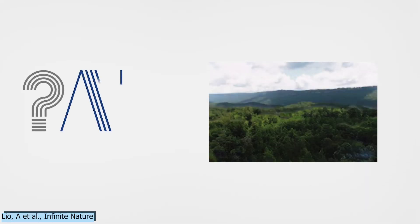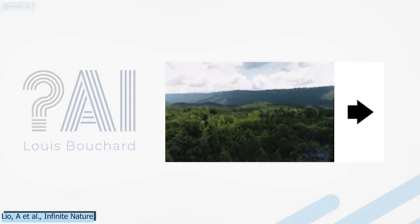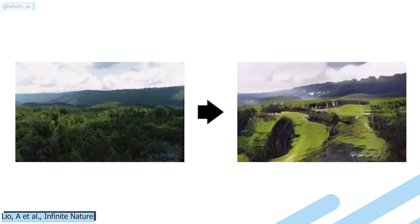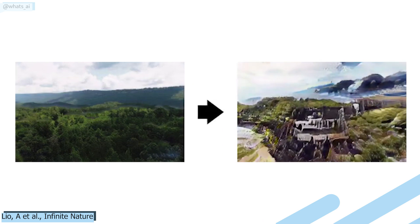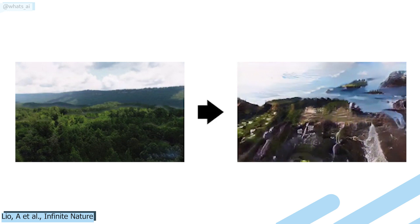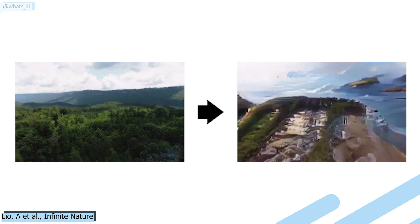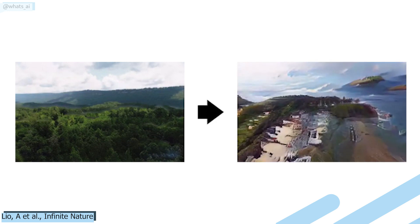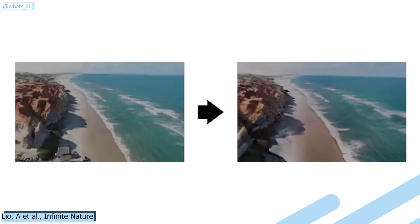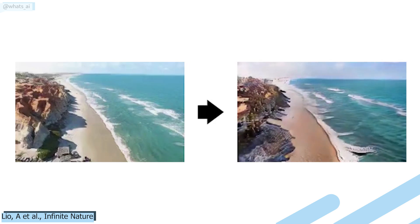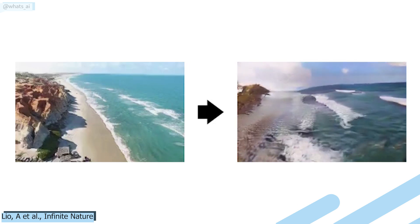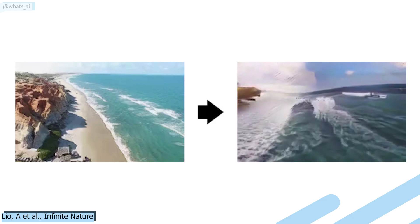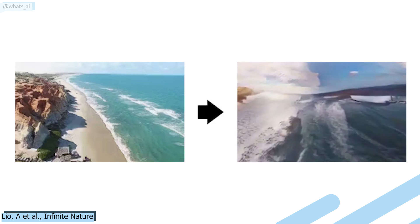This week's paper is about a new task called Perceptual View Generation, where the goal is to take an image, fly into it, and explore the landscape. This is the first solution for this problem, but it's extremely impressive considering we only feed one image to the network and it can generate what it would look like to fly into it like a bird. Of course, this task is extremely complex and will improve over time.